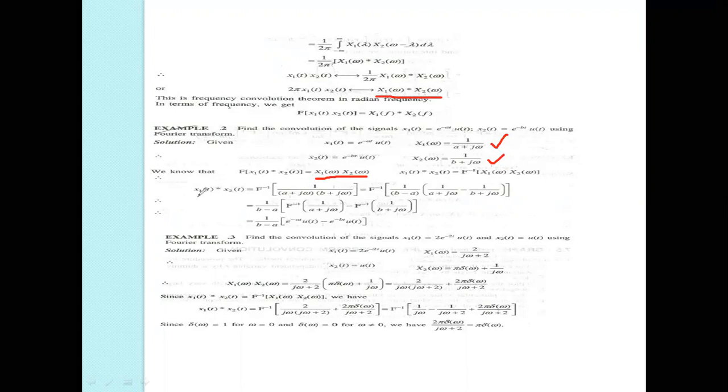Using the Fourier transform convolution relation, x1(t) convolved with x2(t) is the product of their Fourier transforms followed by the inverse Fourier transformation. We got X1(ω) and X2(ω), and we apply the inverse Fourier transformation to get x1(t) convolved with x2(t), because we are asked to find it using the Fourier transformation.